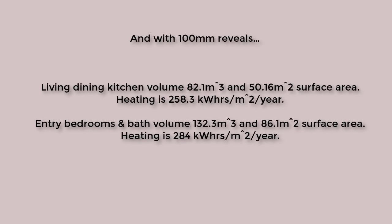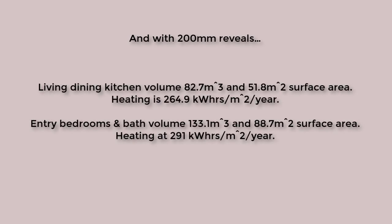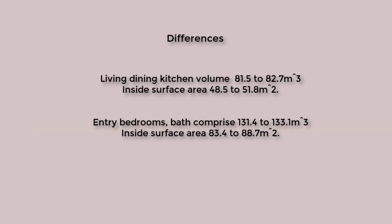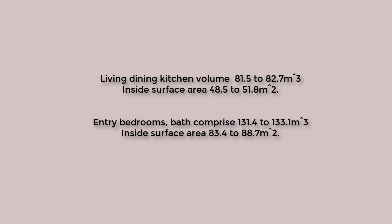Introducing a 100mm reveal to all the windows increases the internal volume as well as the inside surface area. In the case of a 200mm reveal, the volume and inside surface areas further increase. From the base case to the case with 200mm reveals, we get an additional volume of 1.2 cubic meters in the living, dining, and kitchen, and an additional 1.7 cubic meters in the non-living spaces — that's 2.9 cubic meters for the dwelling. We also get an additional 2.3 square meters of inside surface area for the living spaces and 5.3 square meters for the non-living spaces, totalling 8.6 square meters for the dwelling.